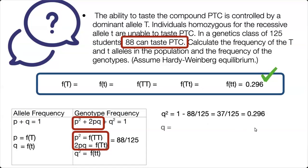Next, we can figure out what Q is by taking the square root of Q squared, and that equals 0.544. So we have the frequency of little t.